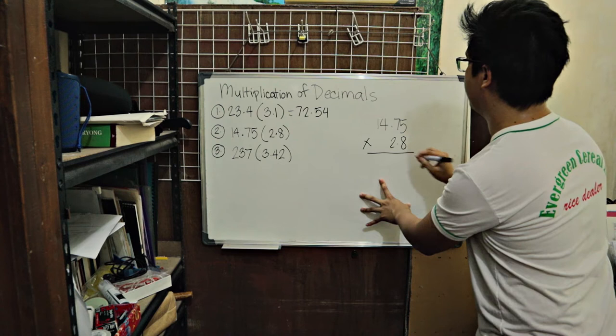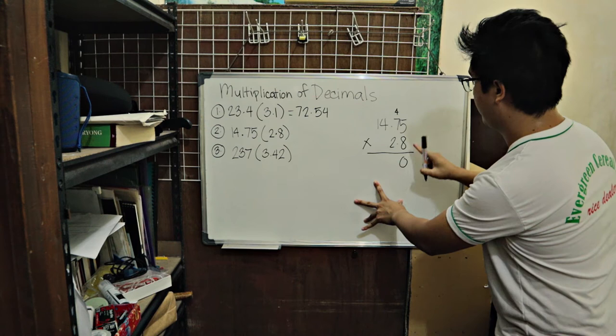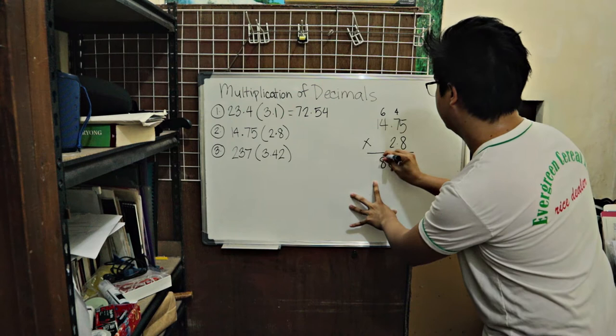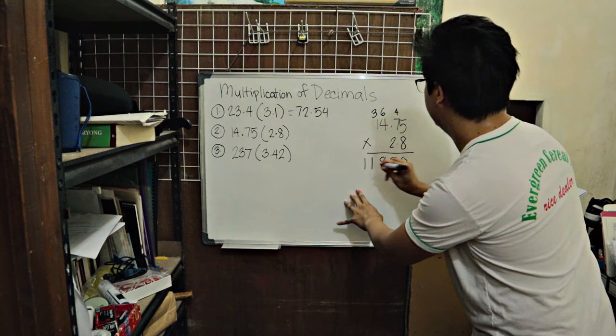So 8 times 5 is 40. So 0. Carry 4. 8 times 7 is 56. Plus 4 that's 60. So this is 0. Carry 6. 8 times 4 is 32. Plus 6 is 38. Carry 3. 8 times 1 is 8. Plus 3. 11.